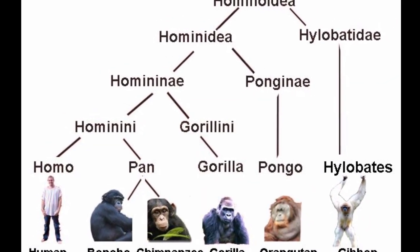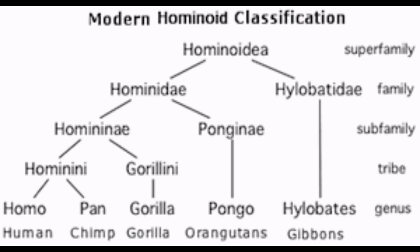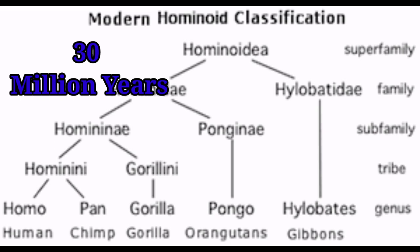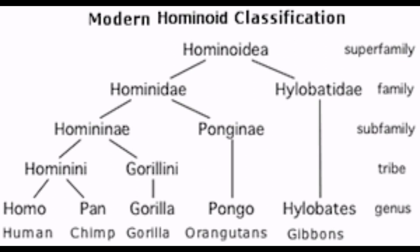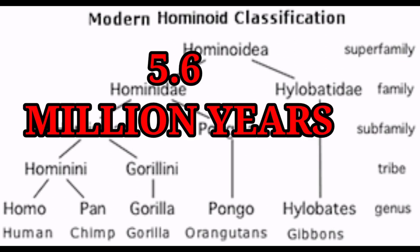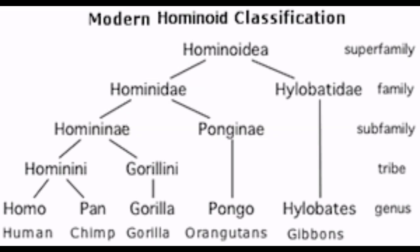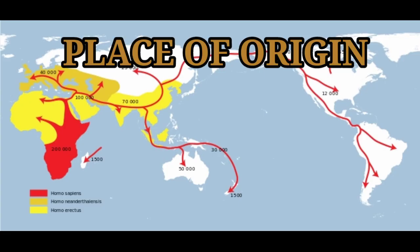As stated earlier, the mammals separated about 36 million years ago. From primates to genus Homo, it took more than 30 million years. The emergence of genus Homo brought human-like creatures on the earth's surface about 5.6 million years ago.